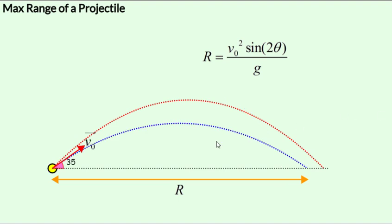Here you can see the trajectories at 35 and 45 degrees. The blue one is 35 and the red one is 45 which has the maximum range.